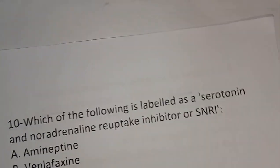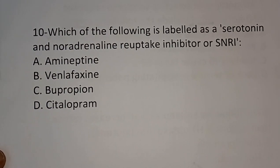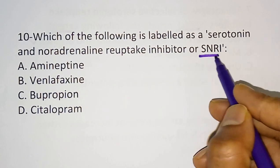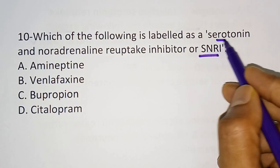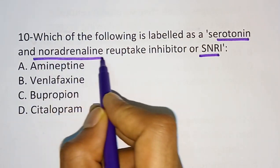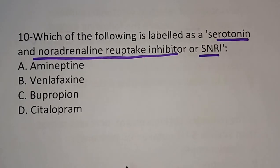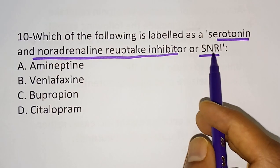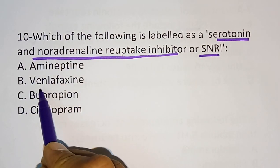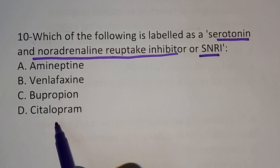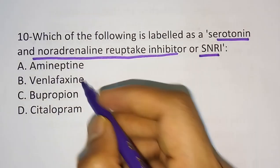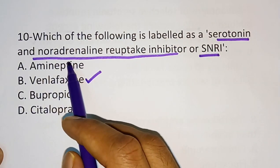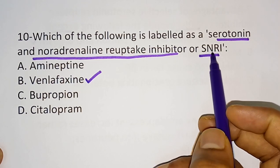The tenth question: which of the following is labeled as serotonin noradrenaline reuptake inhibitor, that is SNRI? Options are Amineptine, Venlafaxine, Bupropion, Citalopram. The correct answer is Venlafaxine — Venlafaxine is labeled as a serotonin and noradrenaline reuptake inhibitor, or SNRI.